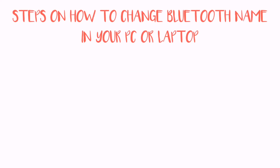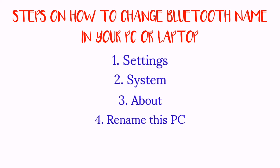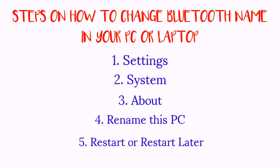Now, let's review the steps on how we change the Bluetooth name in your PC or in your laptop. First, go to Settings. Second, System. Third, About. Fourth, Rename this PC. And lastly, Restart or Restart Later to change the Bluetooth name.